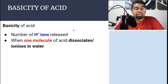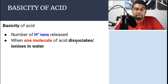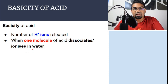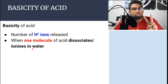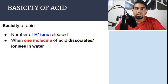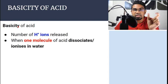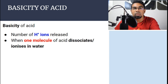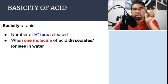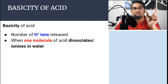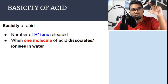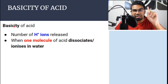The basicity of an acid is the number of hydrogen ions released when one molecule of the acid dissociates or ionizes in water. Basicity of acid has nothing to do with bases — they are two completely different things. We look at one single molecule of the acid dissolved in water and count how many hydrogen ions are released.